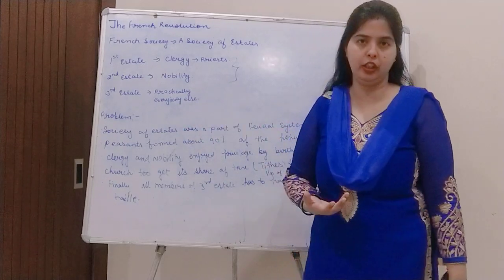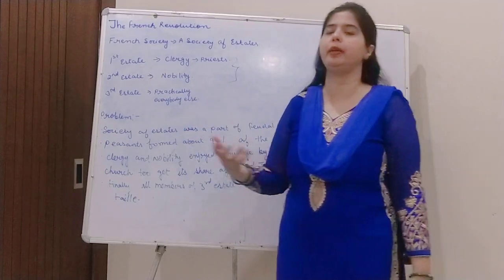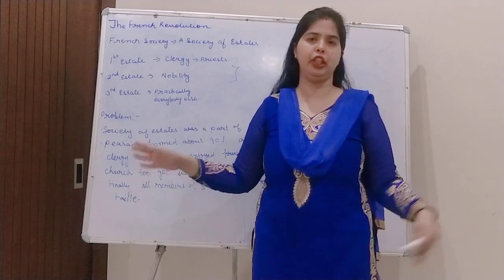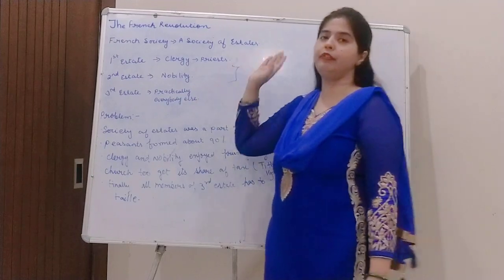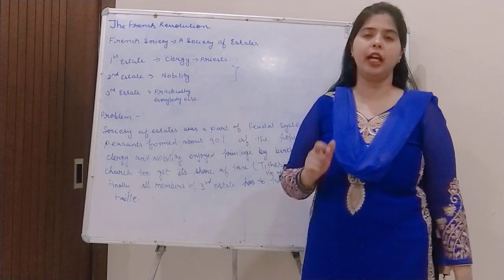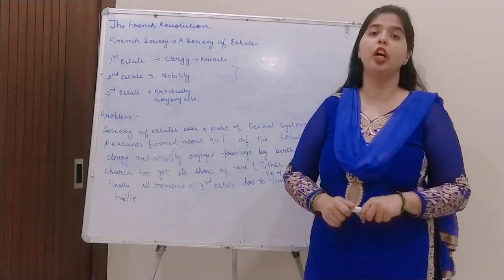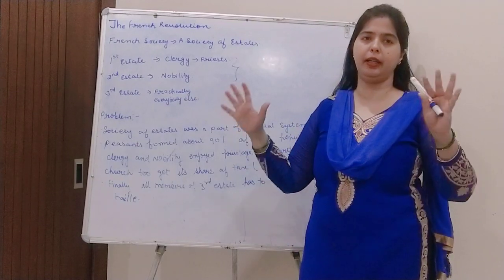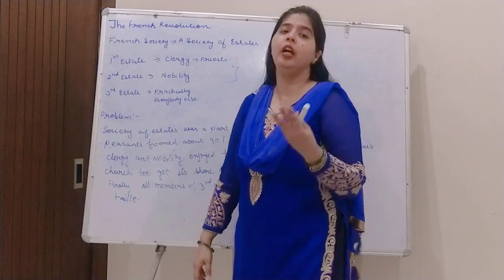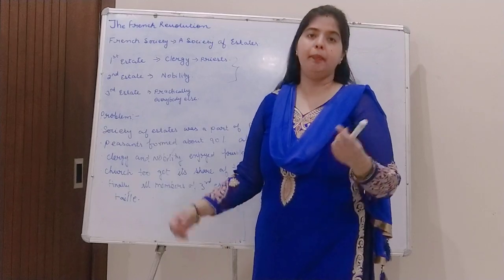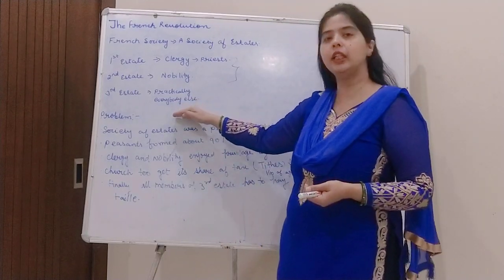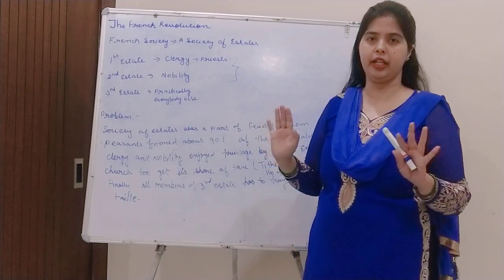The third estate could include a teacher, a cobbler, a judge, or a police officer. Any profession apart from clergy and nobility falls under the third estate. The third estate formed the majority of society — in fact, more than the majority of the population.